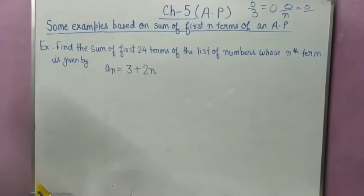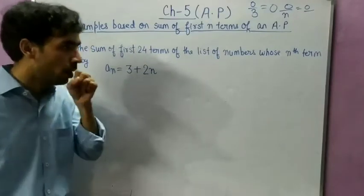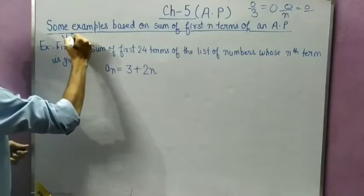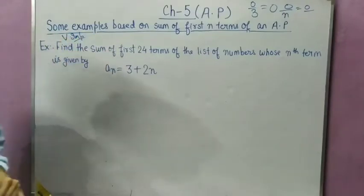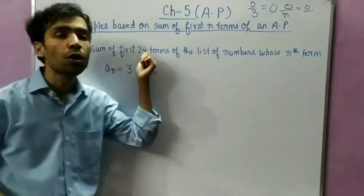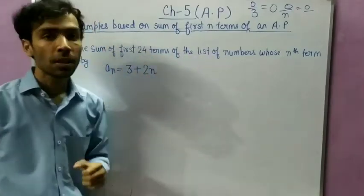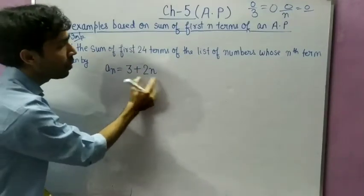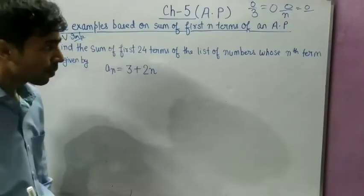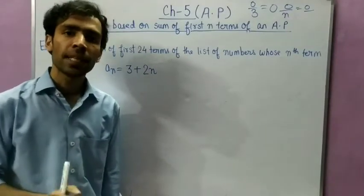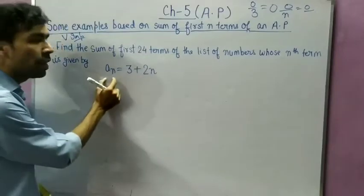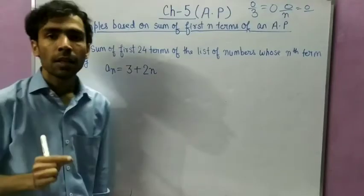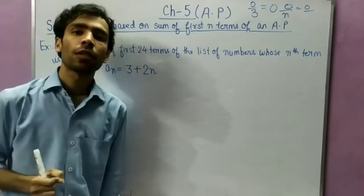Now another important example, which usually comes in board examinations: find the sum of the first 24 terms of the list of numbers whose nth term is given by an = 3 + 2n. The nth term of the AP is given, and with its help you have to find the sum of the first 24 terms.